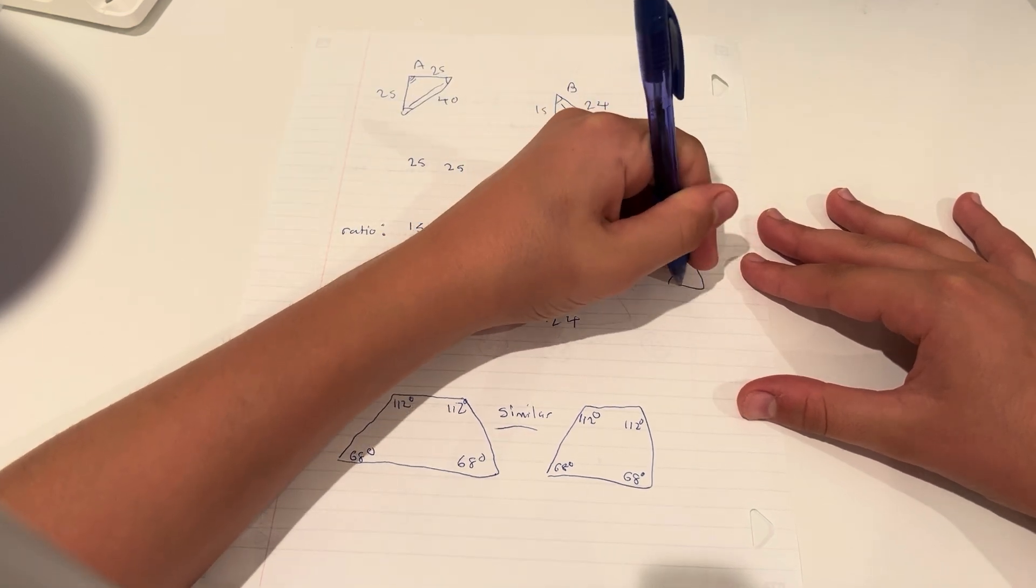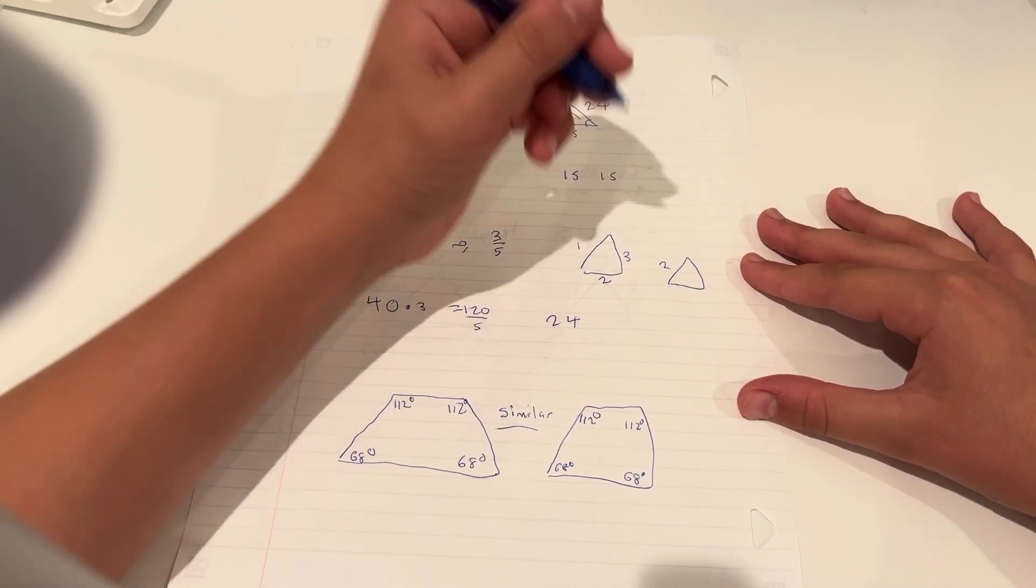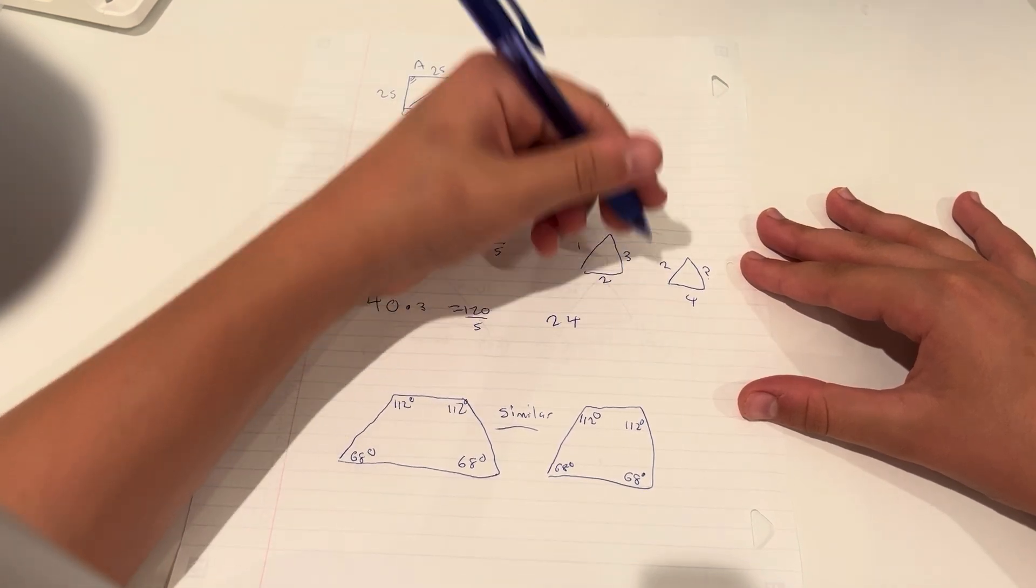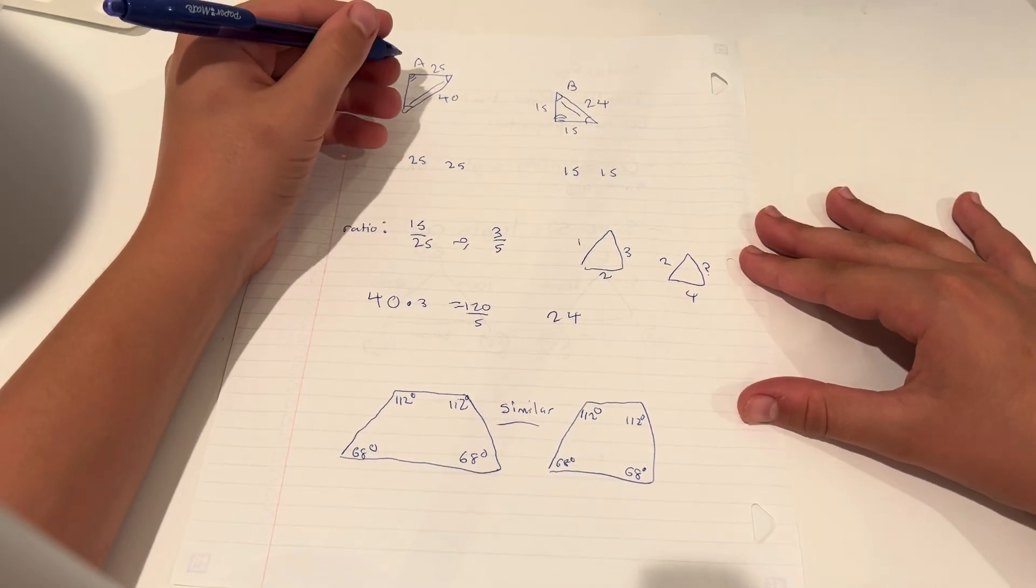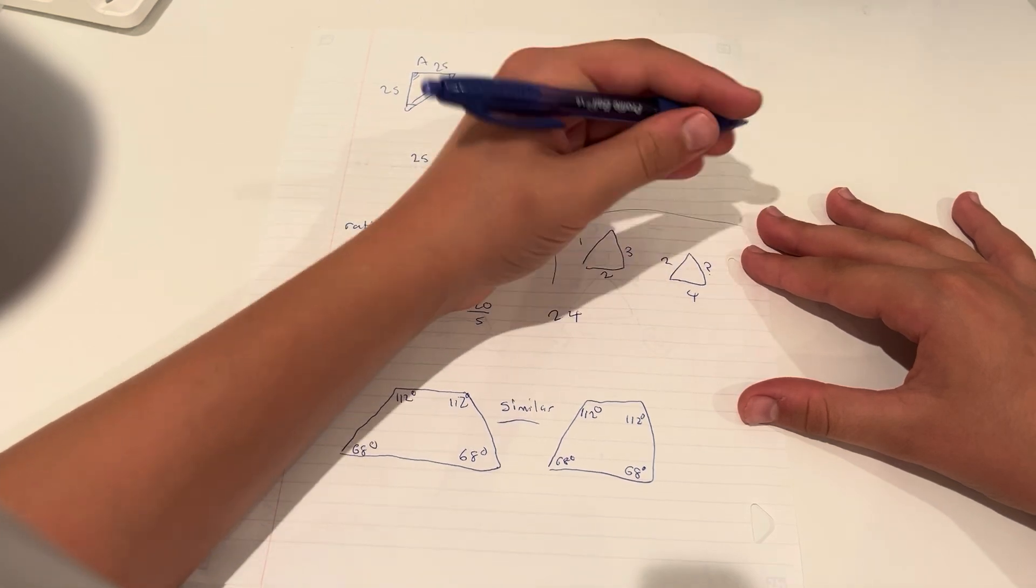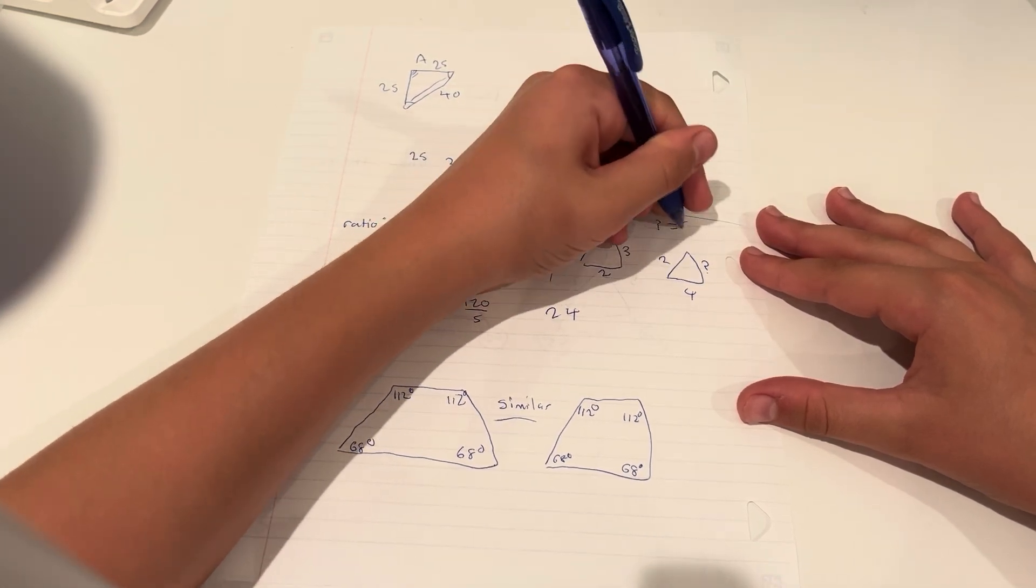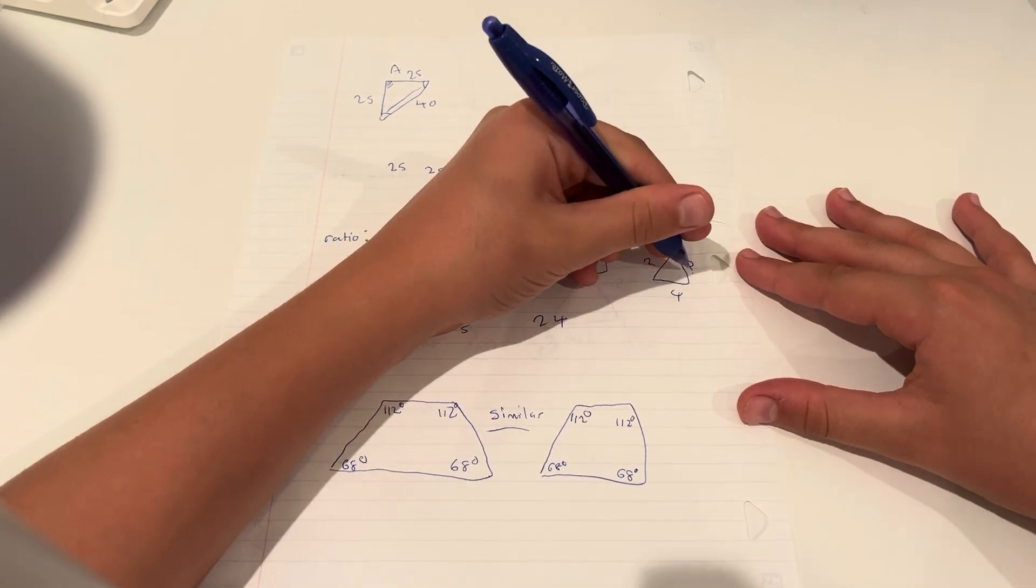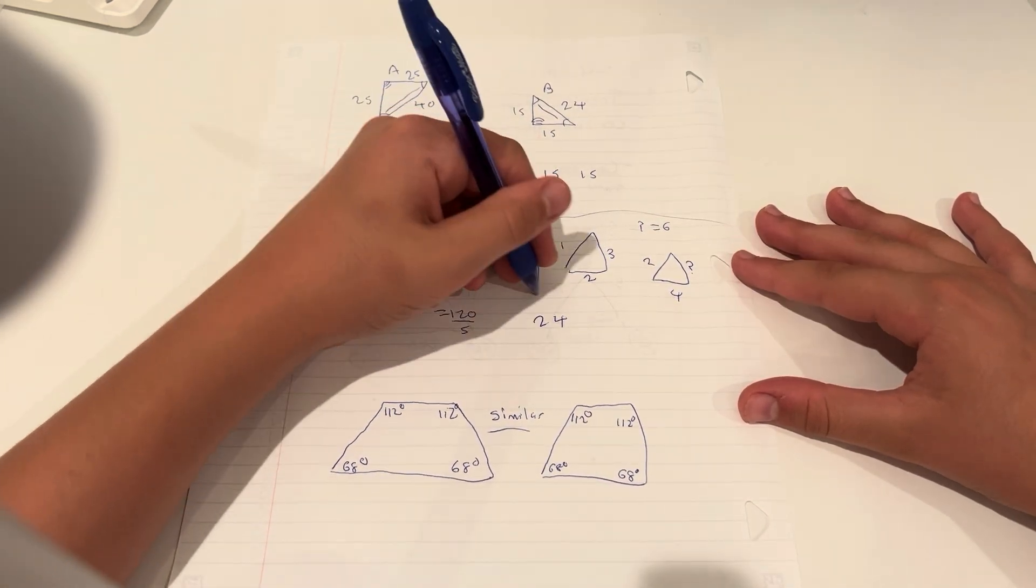And another one that's 2, 4, and question mark, and they're similar. You know that you can use the ratio property that we have to say that question mark equals 6. Because this is twice this, this is twice this, twice 3 is 6. So that way you can tell.